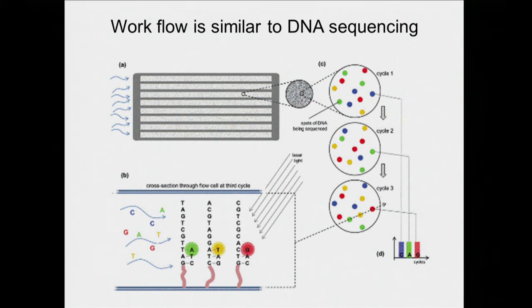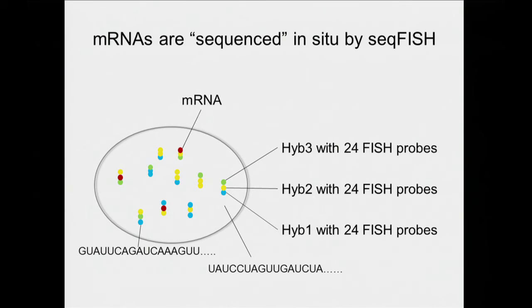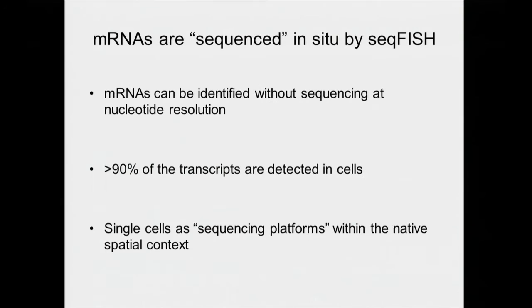This might seem very familiar — in some sense it is very similar to next-generation sequencing. In next-gen sequencing, you have DNA clusters on a flow cell, you flow in dye-labeled nucleotides (A, T, G, C with four different colors), each incorporation is imaged as a colored dot, and then the colors switch. Based on the color sequence across X cycles, you read the sequence of that DNA molecule. What we're doing is the same concept, but instead of nucleotide-level resolution, we're working with FISH probes — 20-mers tiled in stretches of about 30.